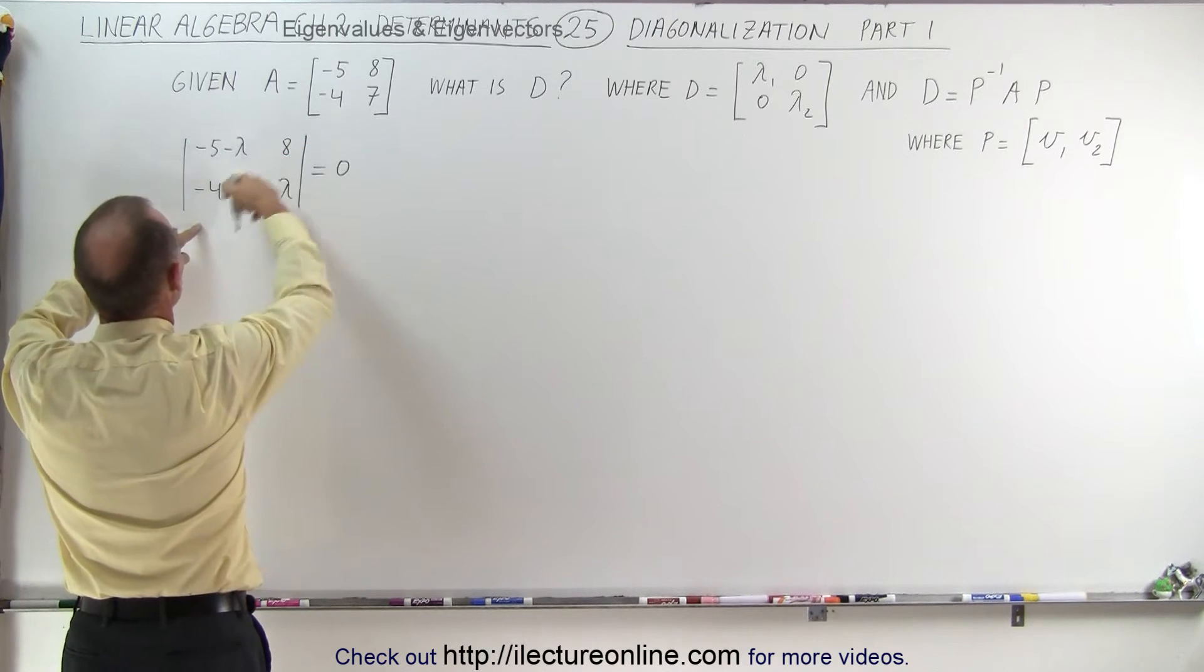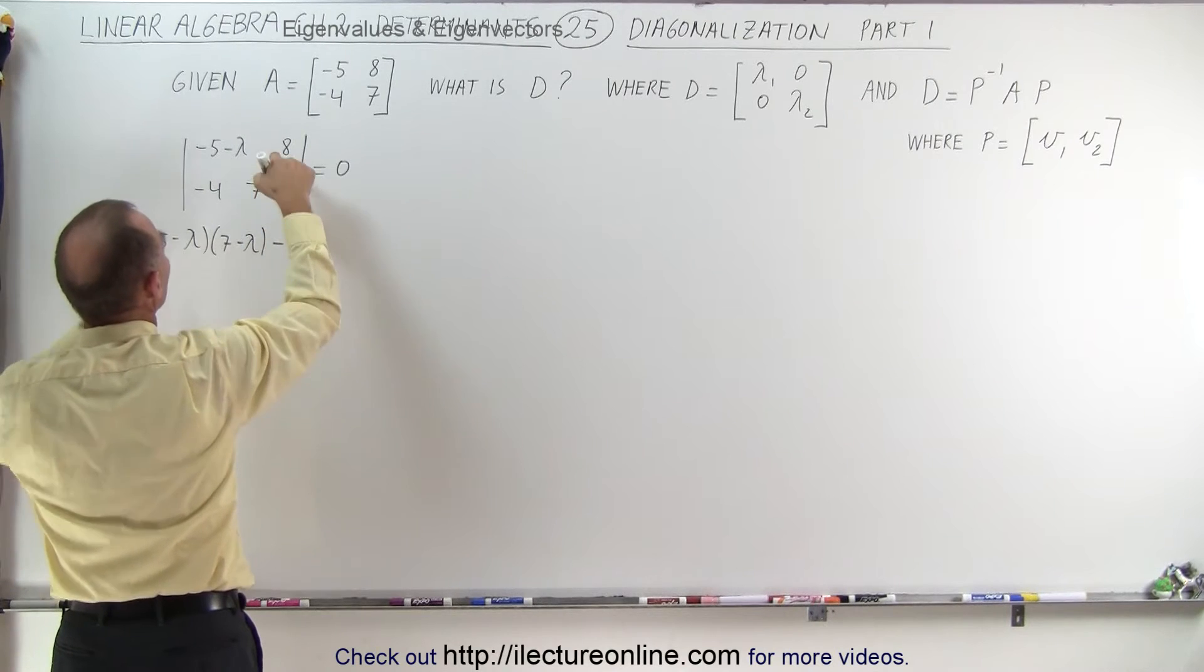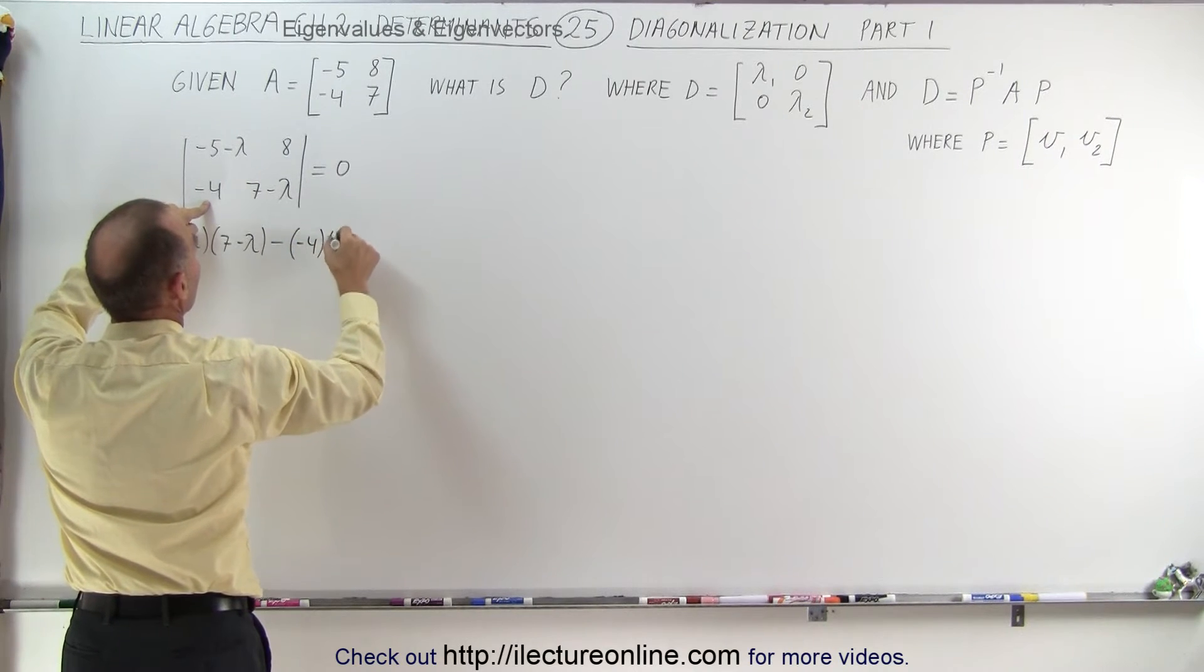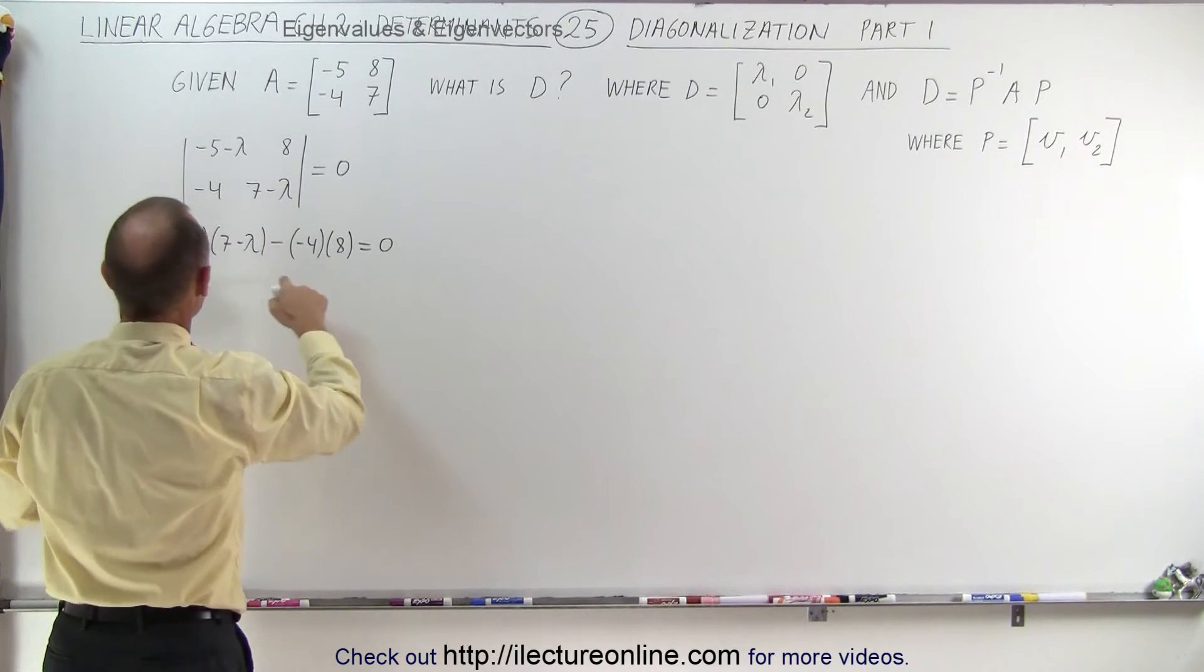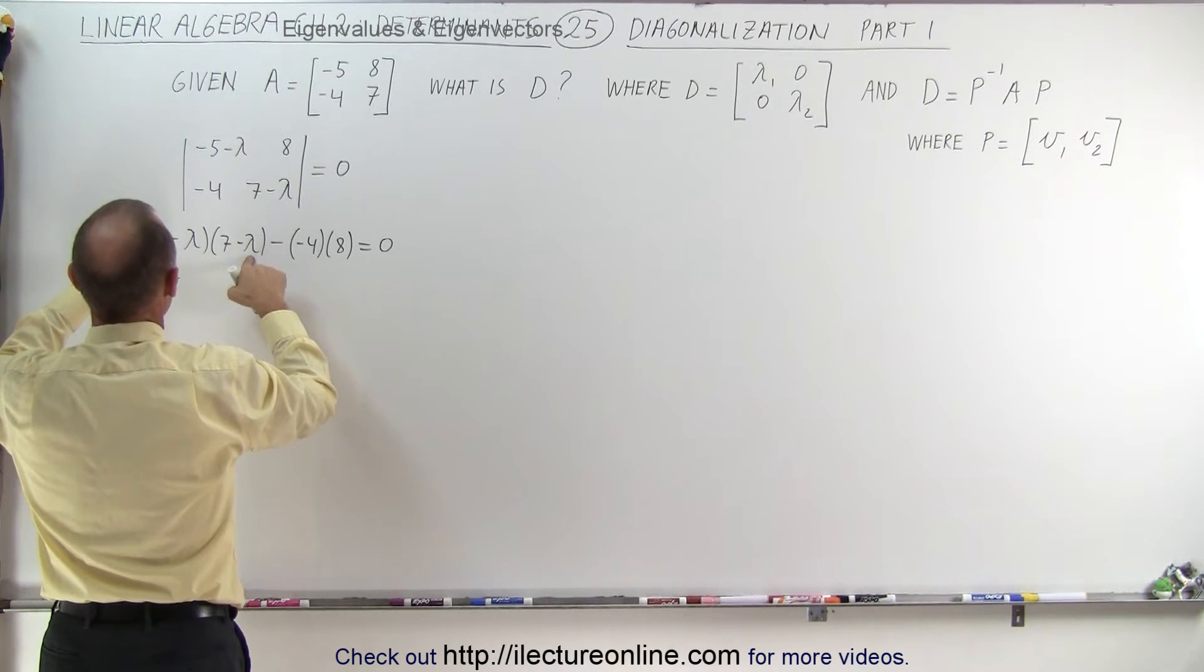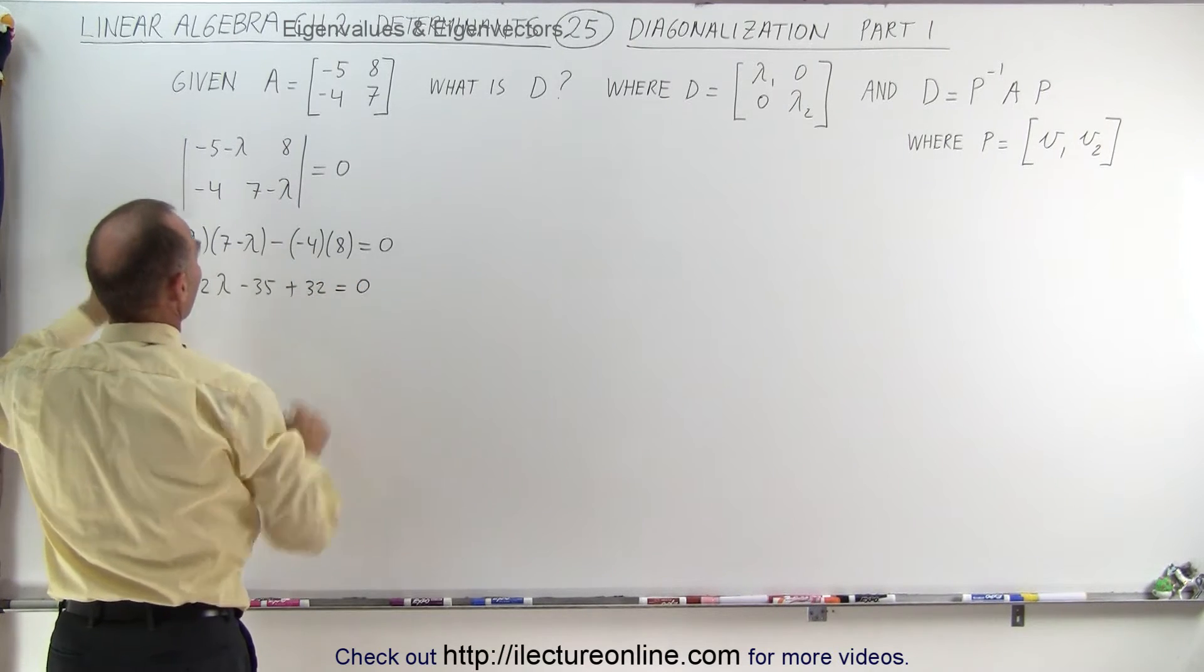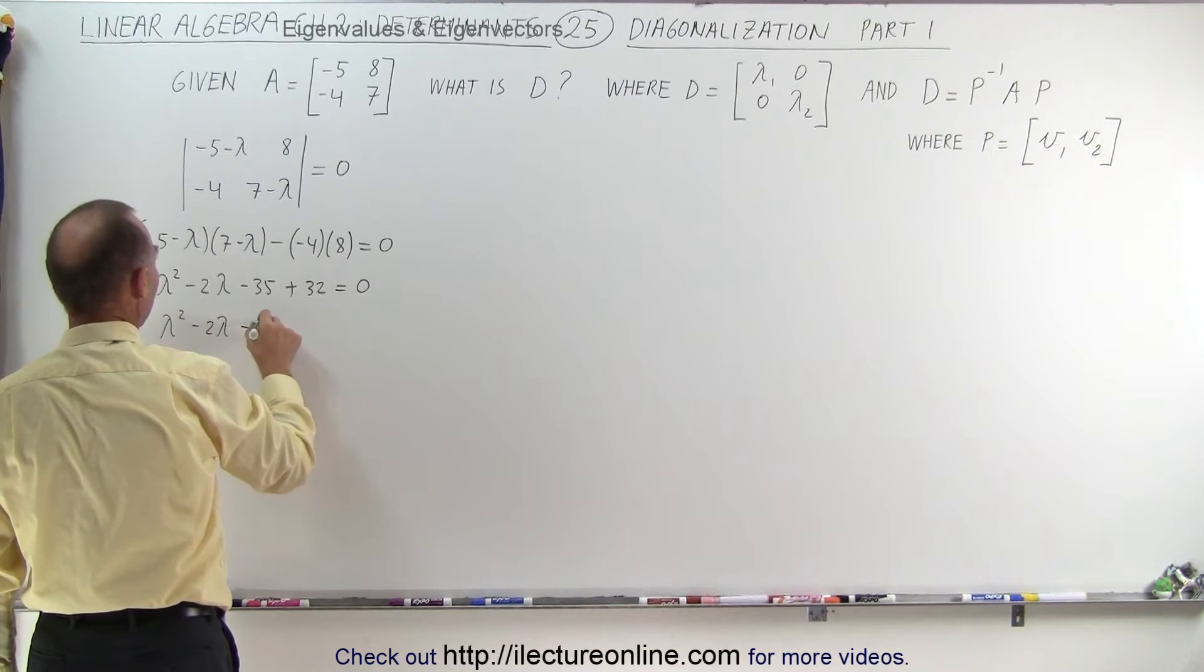That's the method to find the eigenvalues. We cross multiply these and minus the product of those. Minus times a minus that becomes a plus 4 times 8, and we set that equal to 0. Now we have to solve this for lambda because this is a quadratic equation. Lambda squared plus 5 minus 7, that's minus 2 lambda, and minus 35 plus 32 is equal to 0. This is lambda squared minus 2 lambda minus 3 equals 0.